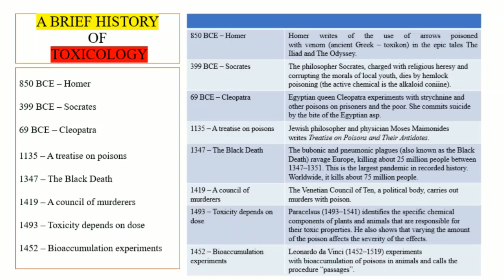In 1195, the Jewish philosopher and physician Moses Maimonides wrote a book called Treatise on Poisons and Their Antidotes. This shows that the branch of toxicology existed long ago — it was written about, studied, and poisons were actively used and investigated.